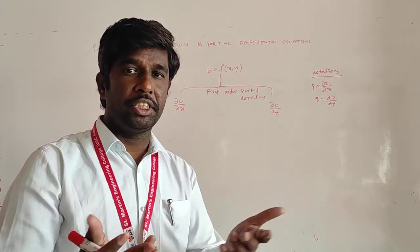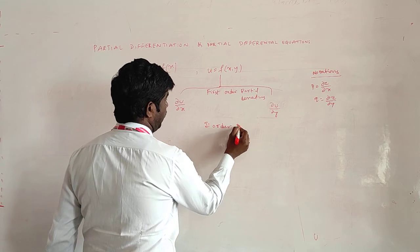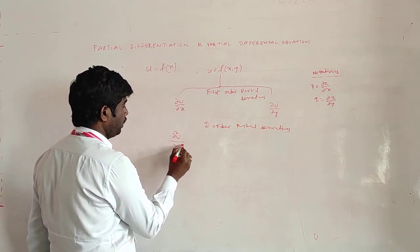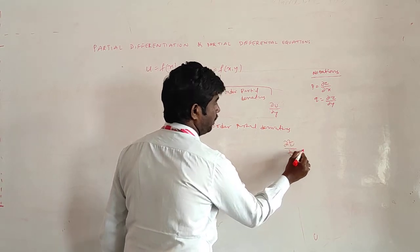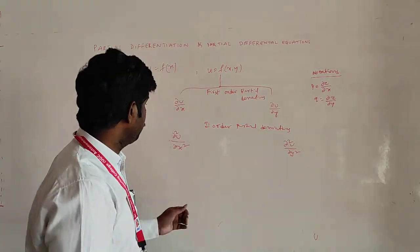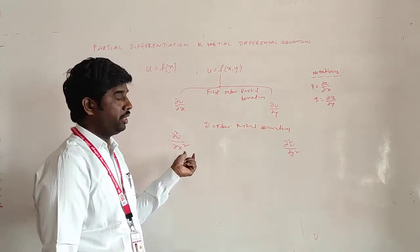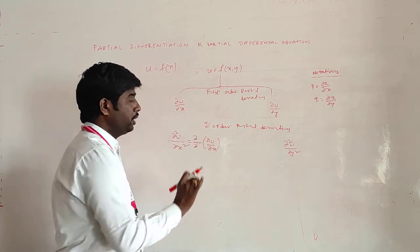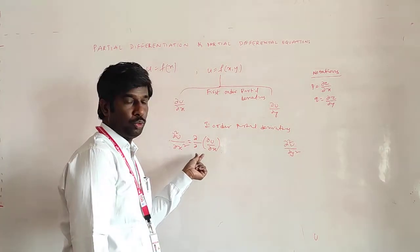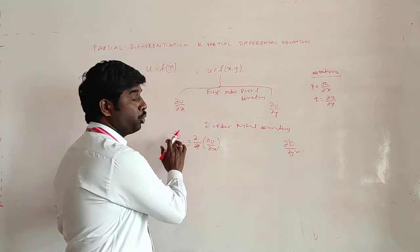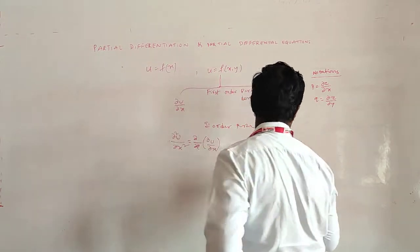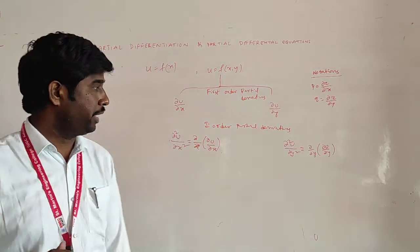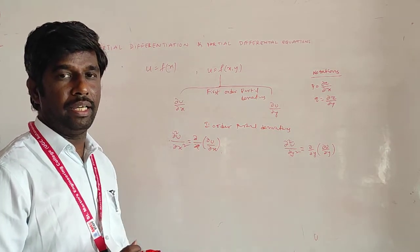Now coming to the second order partial derivatives. That is, we are again differentiating dou u by dou x with respect to x, to get dou² u by dou x². Similarly, the second order partial derivative dou² u by dou y² is the partial differentiation of dou u by dou y with respect to y again. We can also write the mixed order partial derivatives.